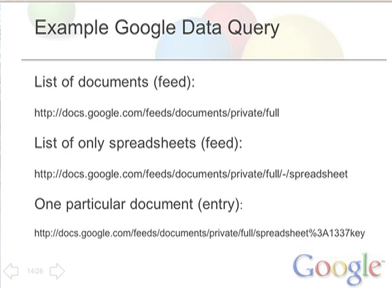When making a query on a Google Data feed, it's basically just a URL that contains enough information to tell us what kinds of entries to expect. Here we have a URL that describes all of the documents in someone's Docs and Spreadsheets account. But maybe all we care about is their spreadsheets — so the second URL uses a category query to restrict results to only spreadsheet document types. And lastly, we can retrieve just each individual entry by passing a URL that contains a document key.